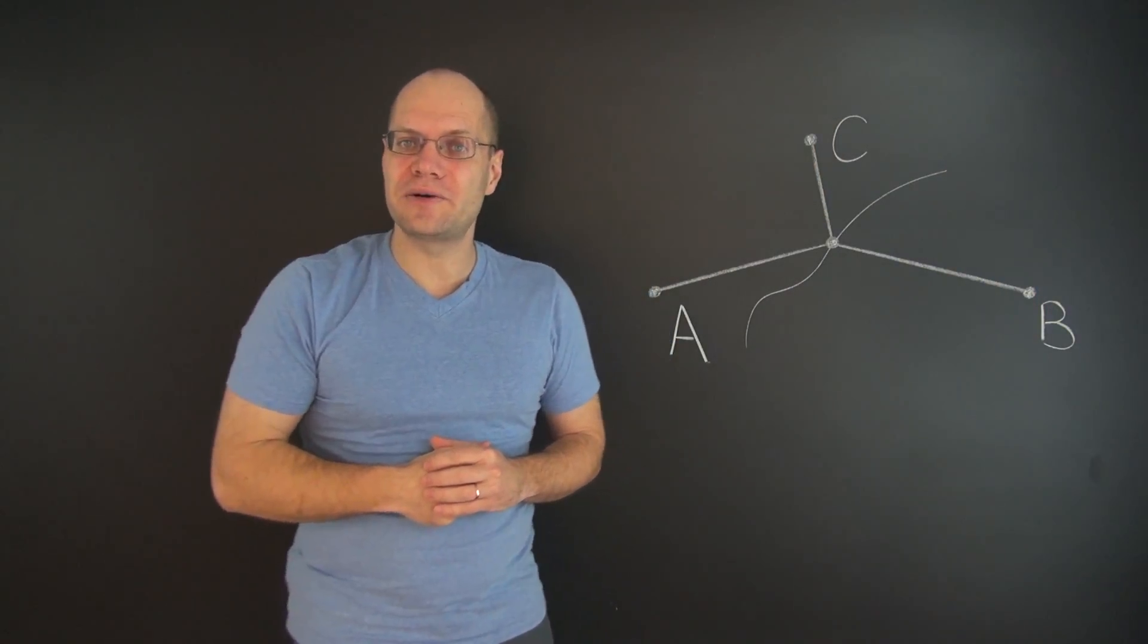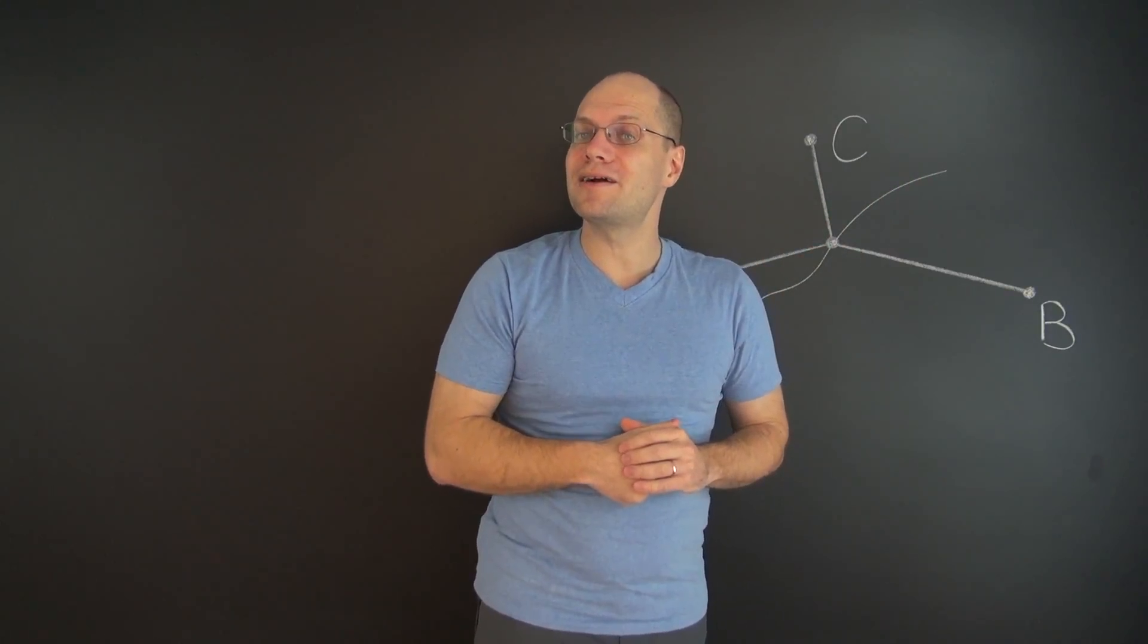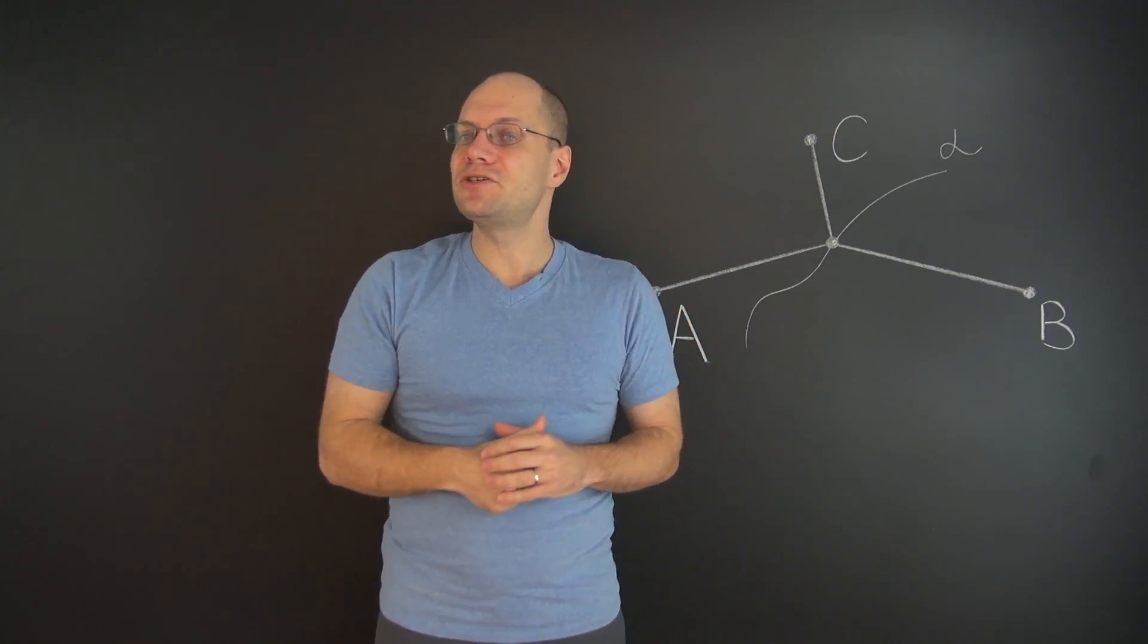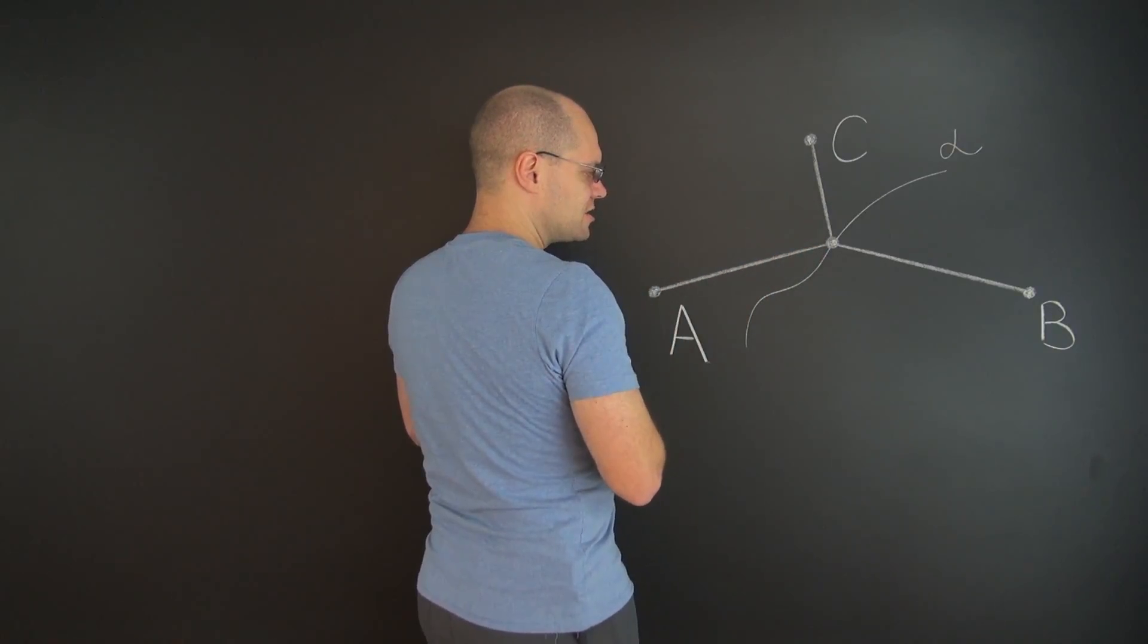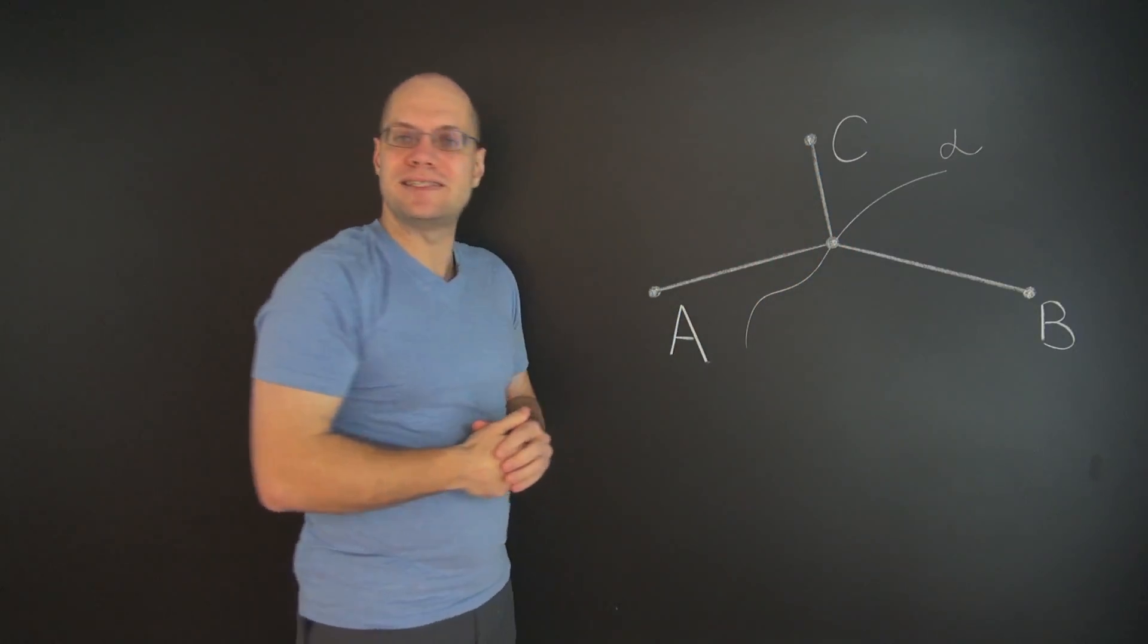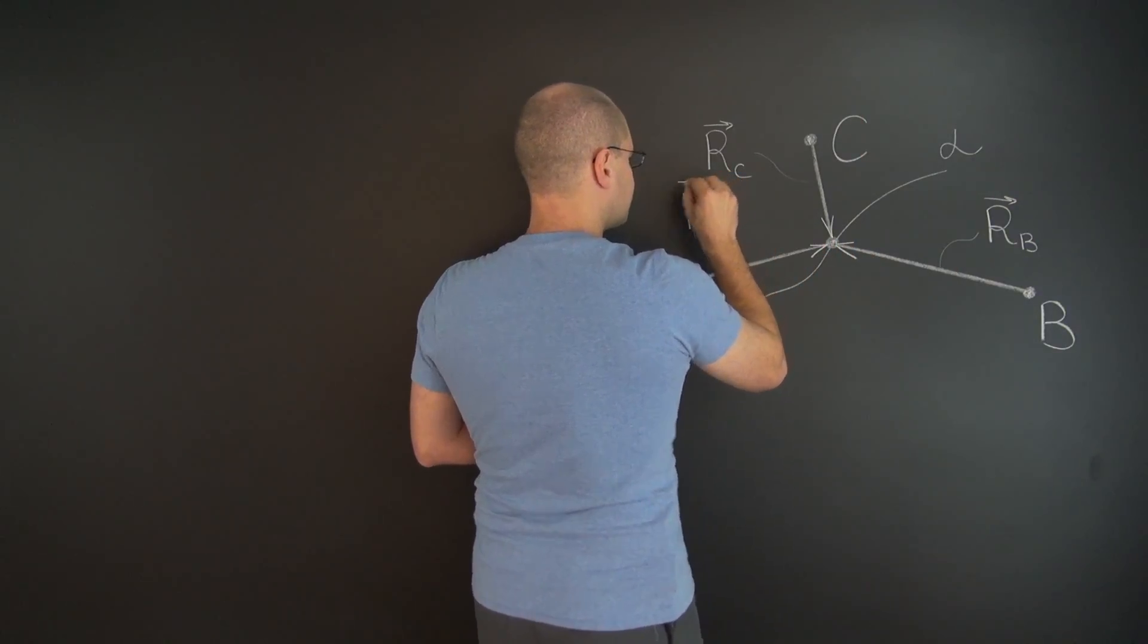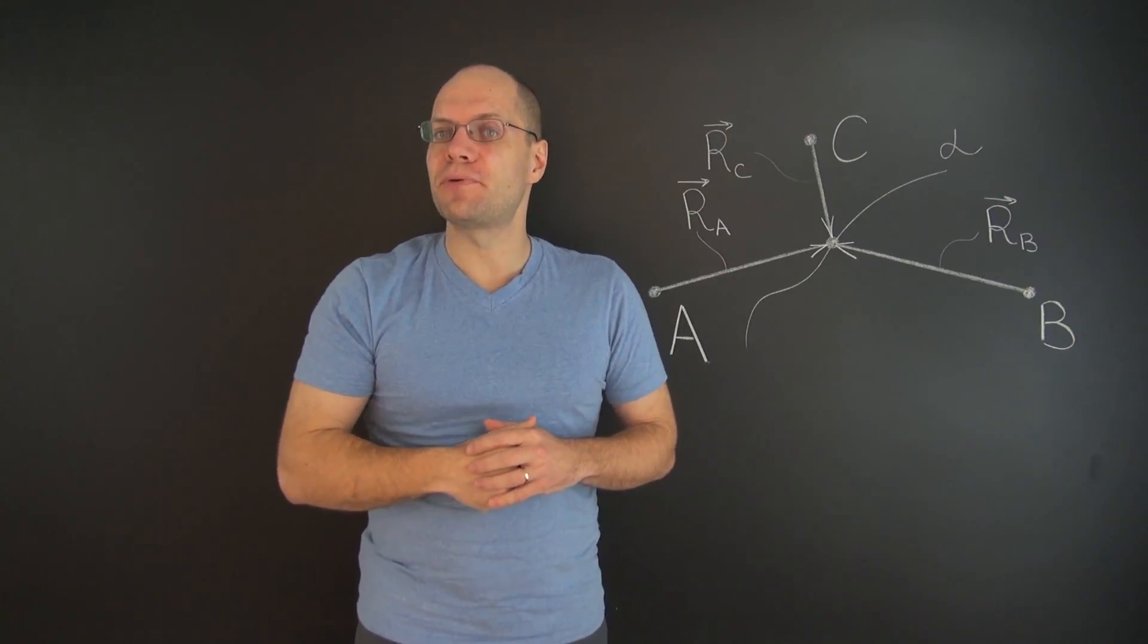So now we have a curve just like we did in Heron's problem. And we can refer it to a parameter alpha. And we will now introduce three vectors similar to the vectors that we introduced for Heron's problem. And they will be capital R sub A, capital R sub B, and capital R sub C.